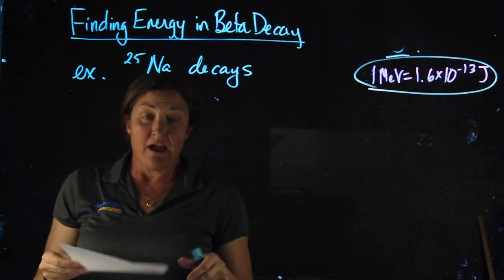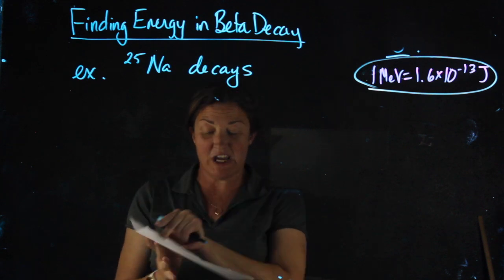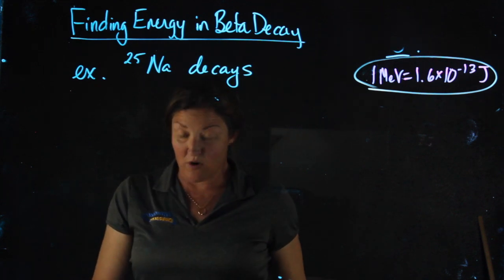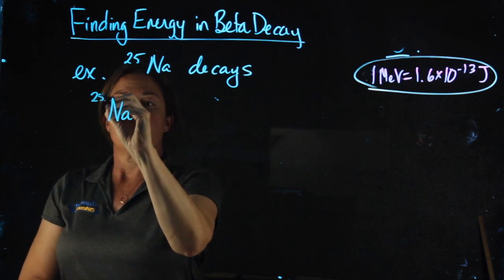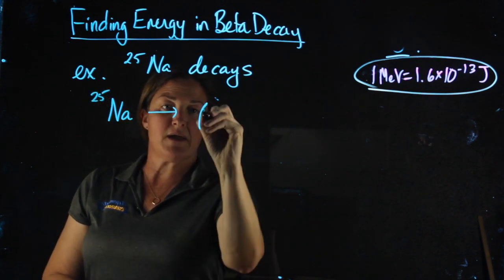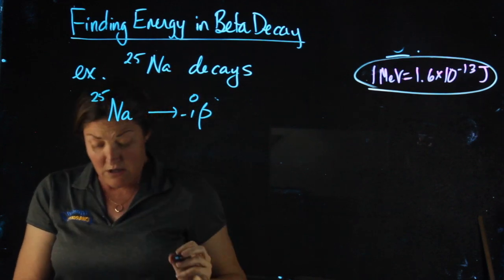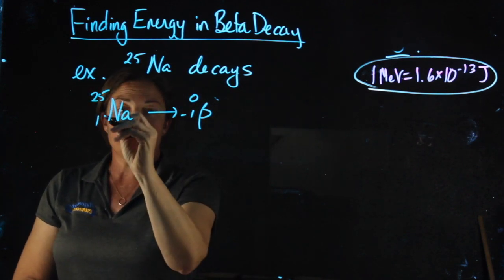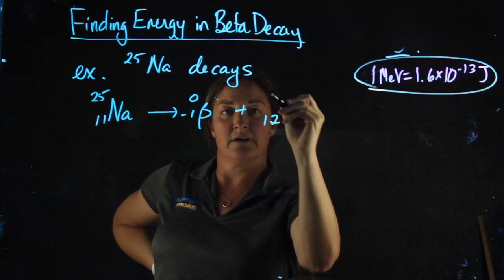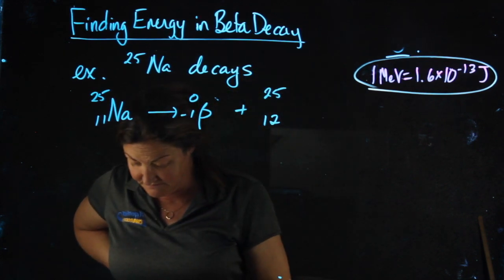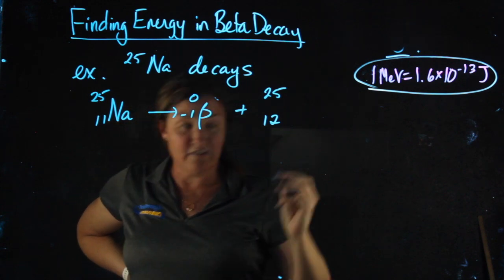Sodium 25 decays. If I consult my nuclide sheet, I will see that it decays according to beta. Na25 is going to give me a beta particle. Sodium is element 11. This means my other product would be 12, 25, element 12 being magnesium.